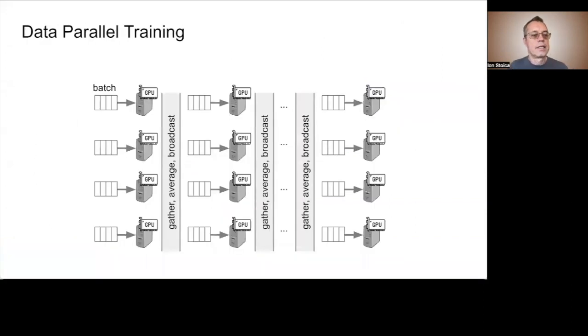Given these trends, it should come as no surprise that several distributed systems have been developed to speed up training. The most popular systems have employed data parallel training. At a high level, these solutions train models on different batches of data in parallel, and then average their weights periodically.